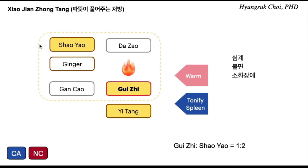And this is the last one: xiao-jian-jong-tang. 'Xiao' means little and also means to make it healthier. 'Jong' means middle — the gastrointestinal system. So this is a decoction for helping the gastrointestinal system.